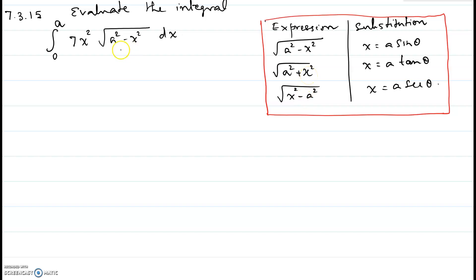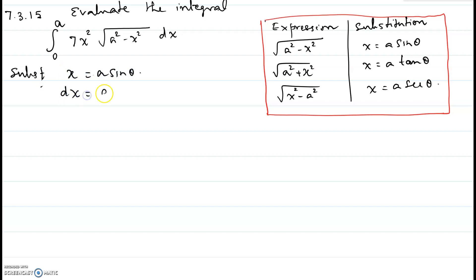Here we have the square root of a² minus x², which is the first case, so we make the substitution x equal to a sin θ. Therefore dx would be a cos θ dθ.